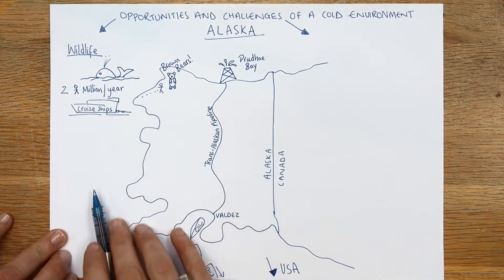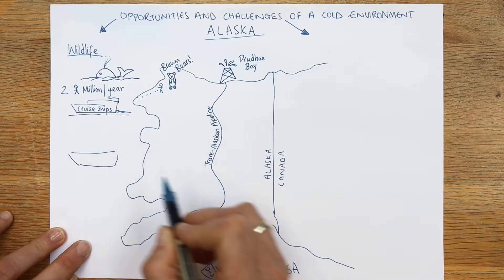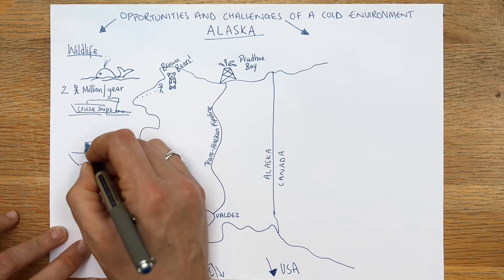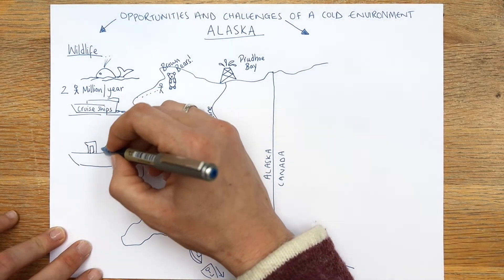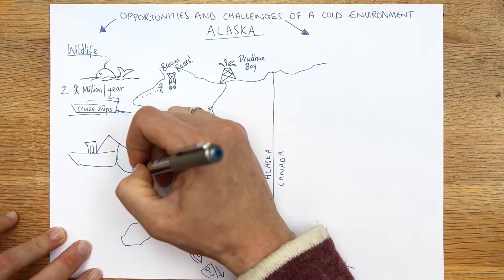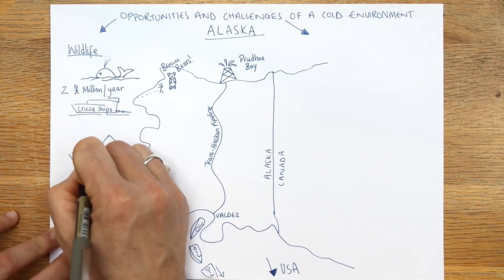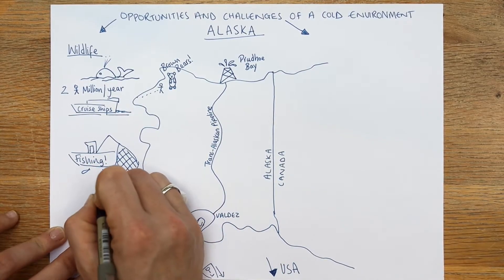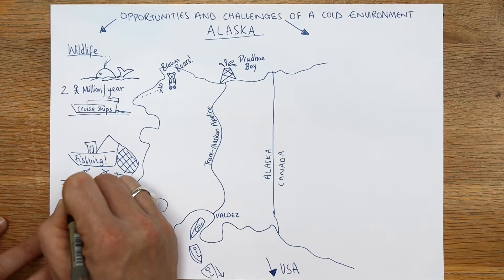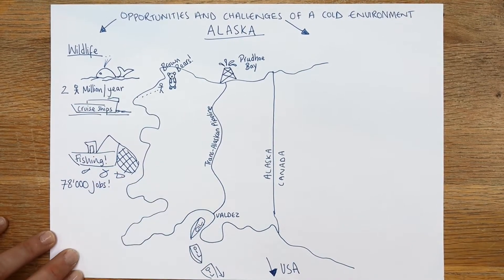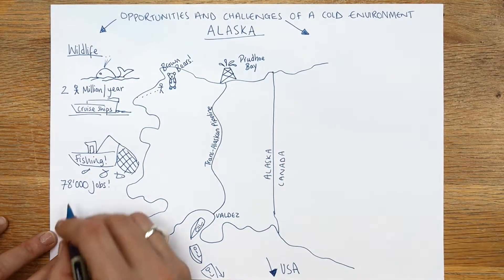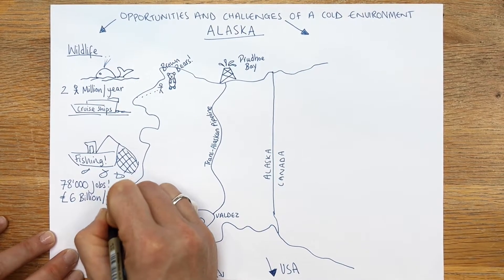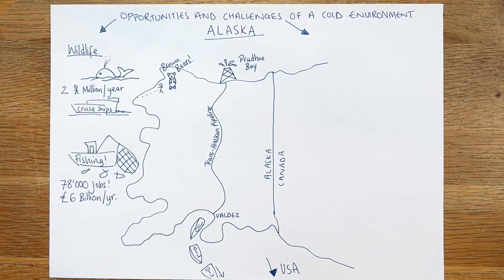These waters, when they're not frozen, are very rich in nutrients due to the marine biology of cold waters, and they are fished hugely - very popular fishing grounds, including salmon. Fishing provides 78,000 jobs to the local Alaskan economy, which is equivalent to £6 billion per year towards their GDP. So it's a huge amount of money from fishing.